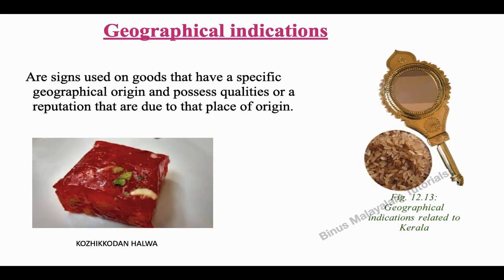The next one is geographical indication. What is geographical indication? These are the signs used on goods that have a specific geographical origin and possess qualities or a reputation that are due to that place of origin.